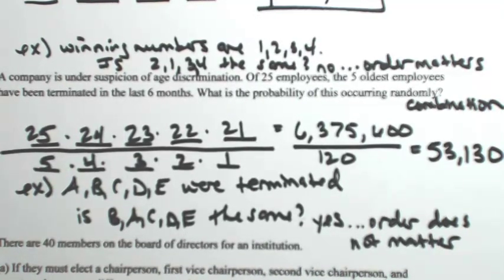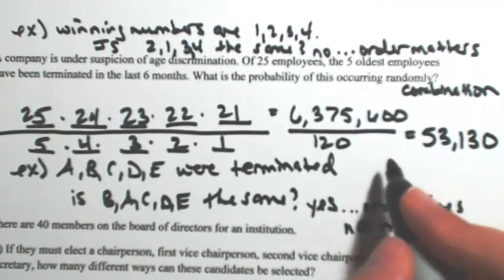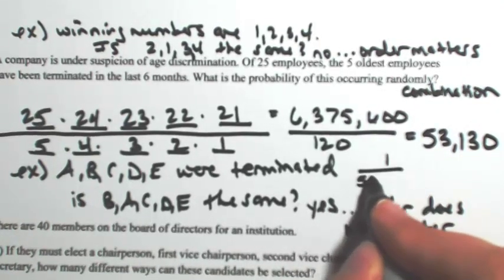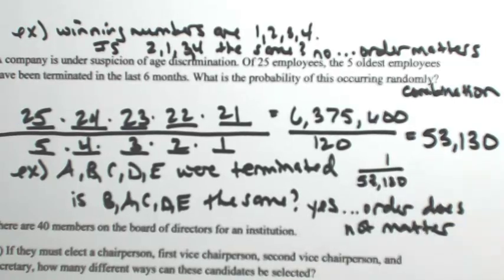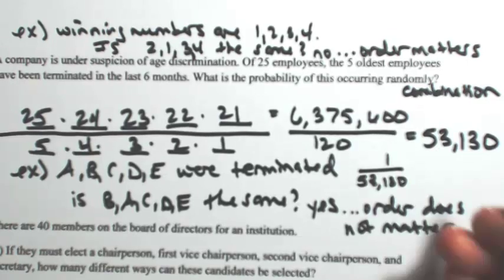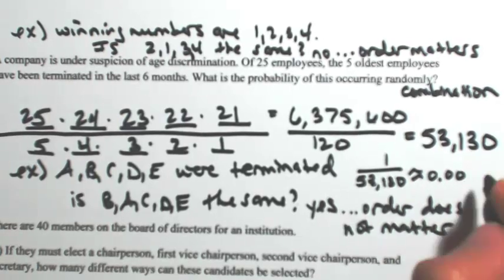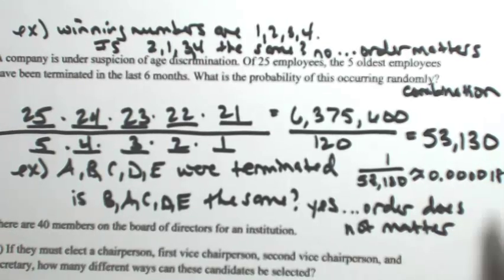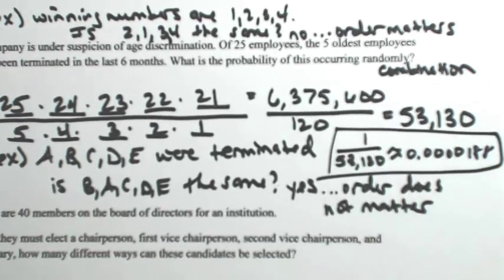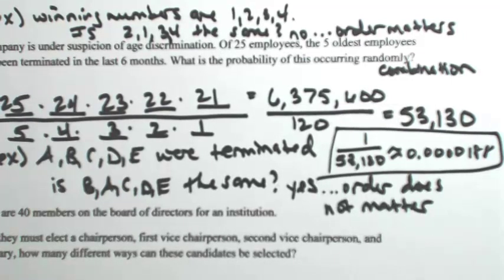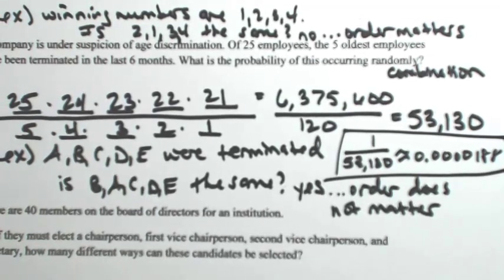So 6,375,600 divided by 120 gives us 53,130 ways for these five employees to be terminated. So then the follow-up question is, what is the probability of this occurring randomly? So one out of 53,130, really, really small number. So we're at about 0.0000188. So the chances of this happening randomly is really, really small. It appears on the surface that there is some age discrimination here, because that shouldn't have happened.